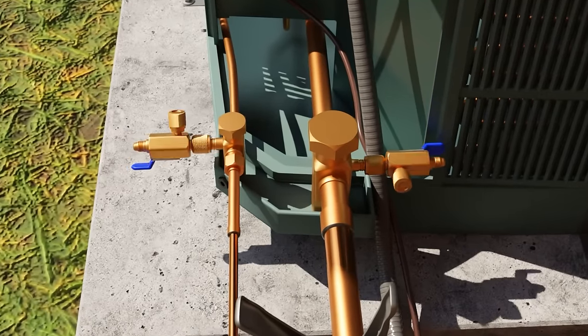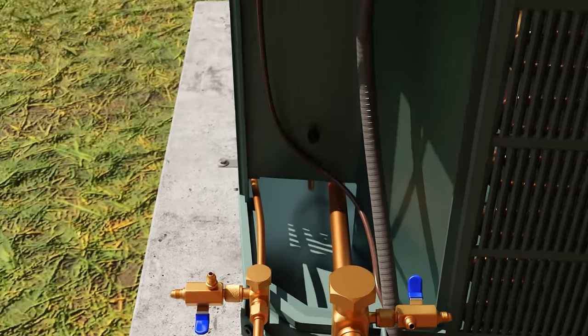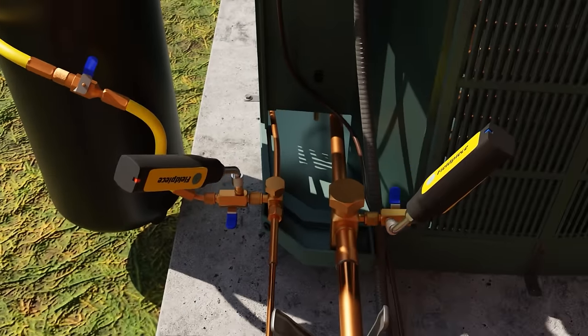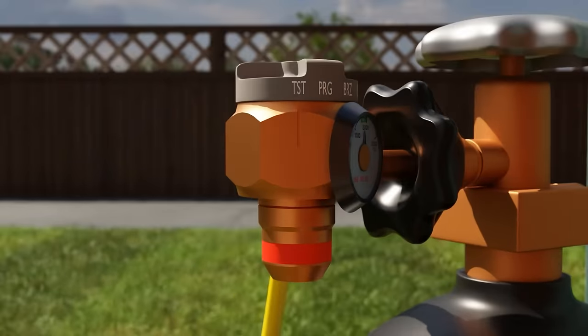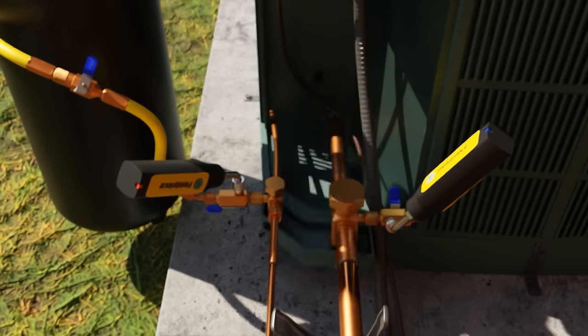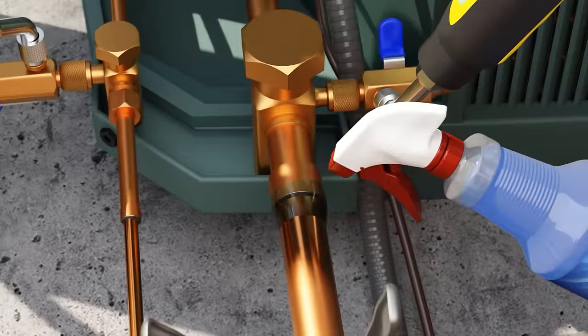Inspect all of your connections with a mirror both before and after pressurization and bubble testing. Now we're going to put core remover tools on the system and prepare for our pressure test and later our vacuum. Pressurize the system to the allowable maximum test pressure of the evaporator or condenser, whichever one is lower. Bubble test all of your connections and check with a mirror.